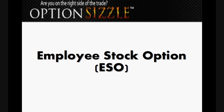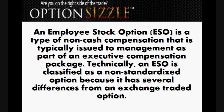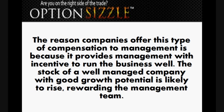An employee stock option, or ESO, is a type of non-cash compensation that is typically issued to management as part of an executive compensation package. An ESO is classified as a non-standardized option because it has several differences from an exchange traded option. The reason companies offer this type of compensation to management is because it provides management with the incentive to run the business well. The stock of a well-managed company with good growth potential is likely to rise, rewarding the management team.